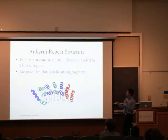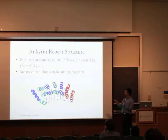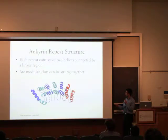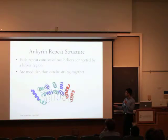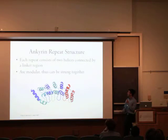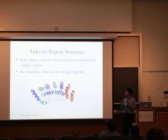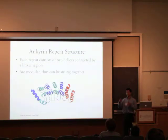I'd like to give you an introduction to ankyrin repeat structure. Each repeat has two helices connected by a linker region, and in this image we can see a set of ankyrin repeats where each color represents one ankyrin repeat, with one helix here and one helix here. Ankyrin repeats are interesting because they are modular and can be strung together much like beads on a string — and beads from different species can be put on the same string so that all the proteins work together.